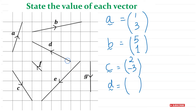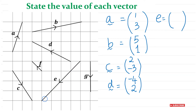Vector d: the arrow is going to the left, so four left and two up — that gives (-4, 2). Vector e went down and to the left. Counting horizontal movement: four to the left, so negative four. Then from there it went down four, so negative four in the y-direction as well. That gives vector e as (-4, -4).